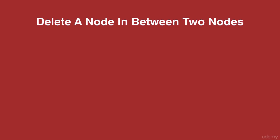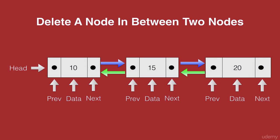Let's take an example of a doubly linked list with three nodes: the head node with the data 10, a second node with the data 15, and a third node with the data 20. The node which we want to remove from this list is the node with the data 15, that's in between 10 and 20.